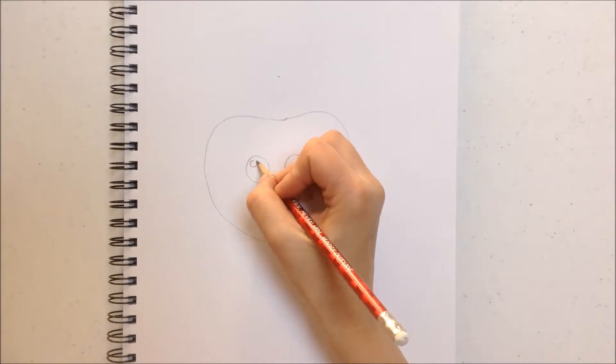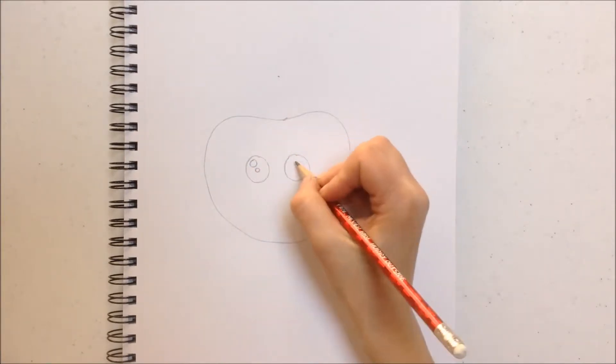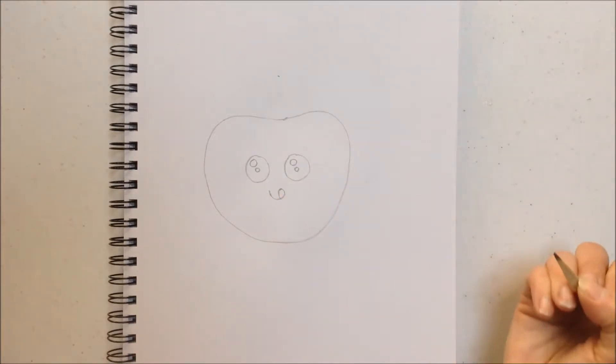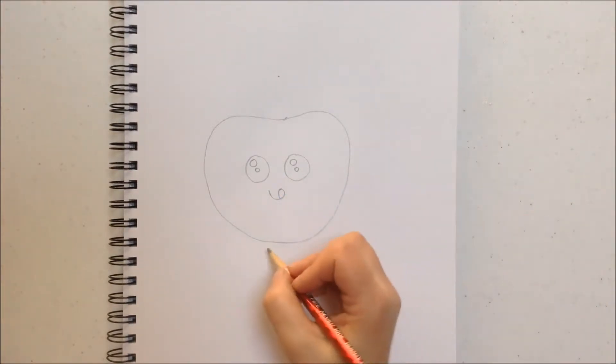For the eyeballs we're going to draw two small circles, one a little larger than the other in the upper corner of the eye. And for the mouth we're going to draw a curved line with a little loop on the end so it looks like he's sticking his tongue out.